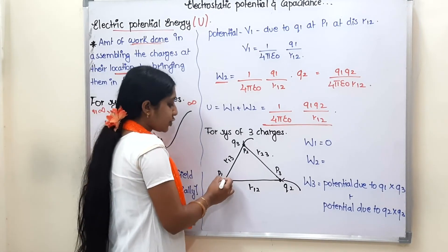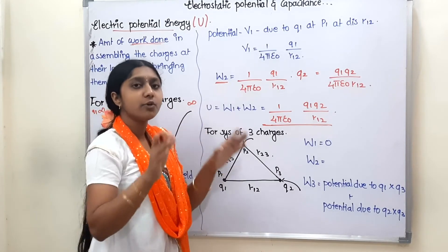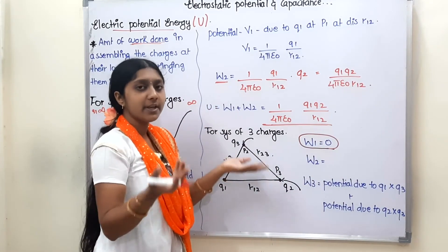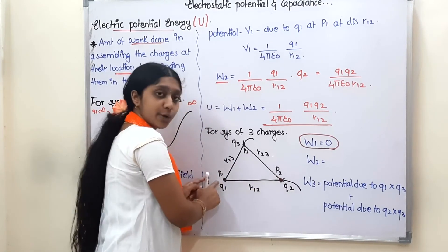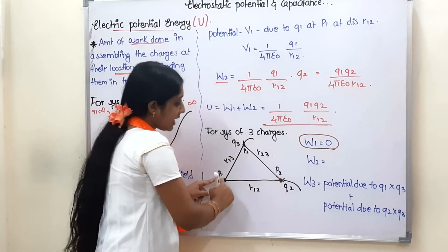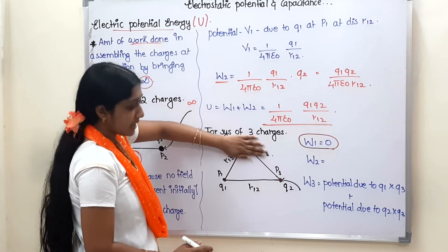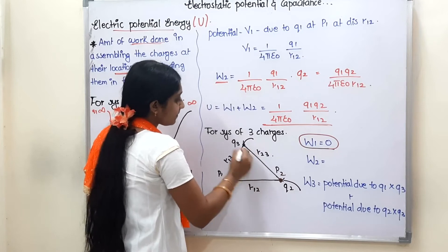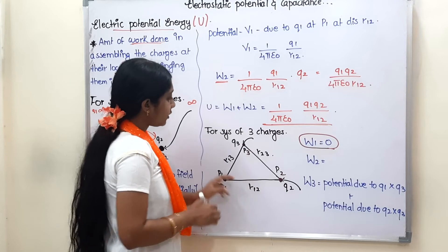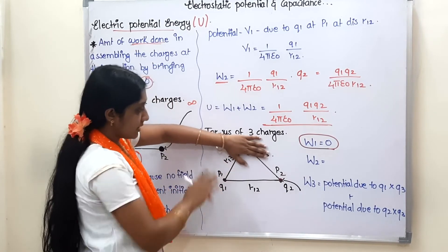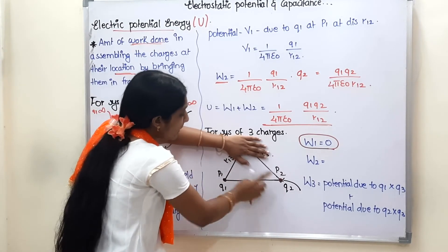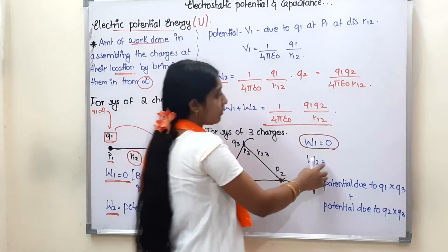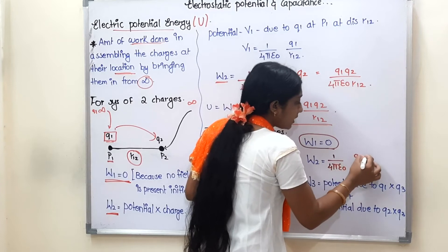Now for the system of three charges, the story is the same. Q1 is the first charge, so there is no prior field or force — W1 is zero. When we bring Q2, we get the same result: W2 equals 1/(4πε₀) · Q1·Q2/R12. The potential formula is 1/(4πε₀) · Q1·Q2/R12.